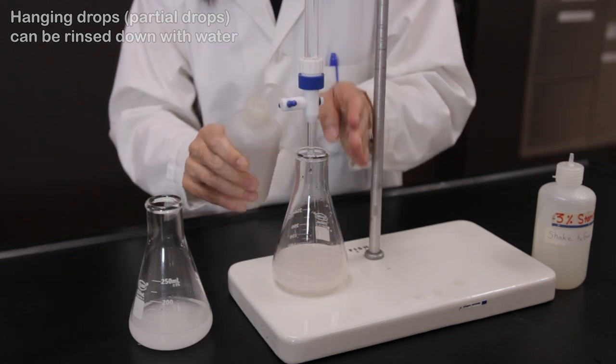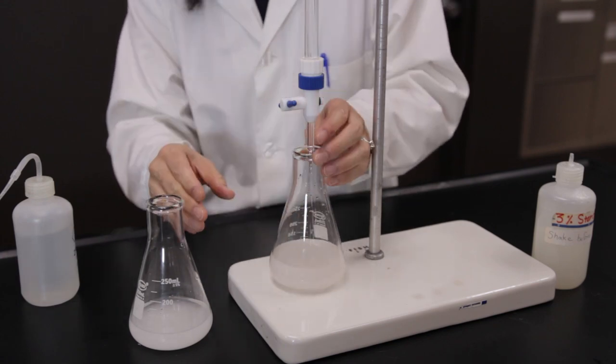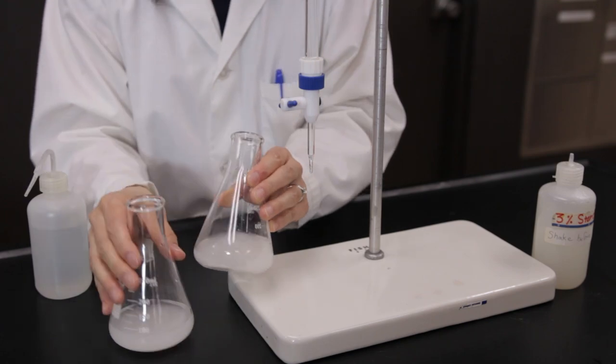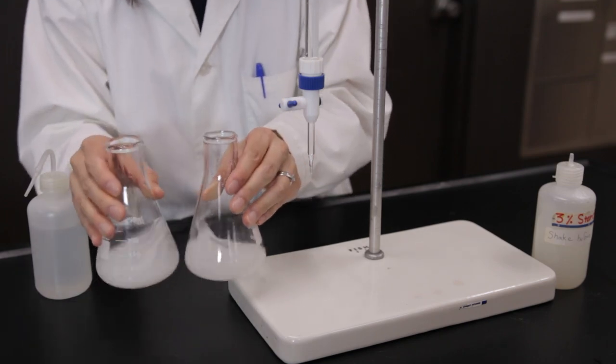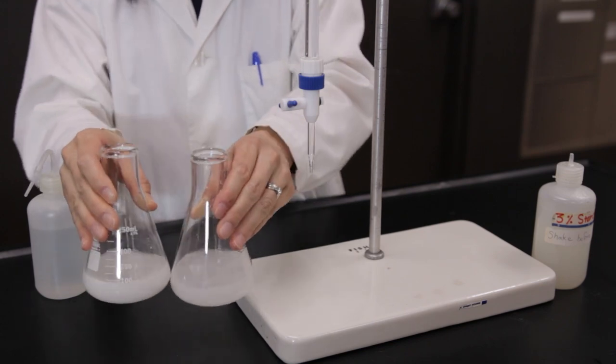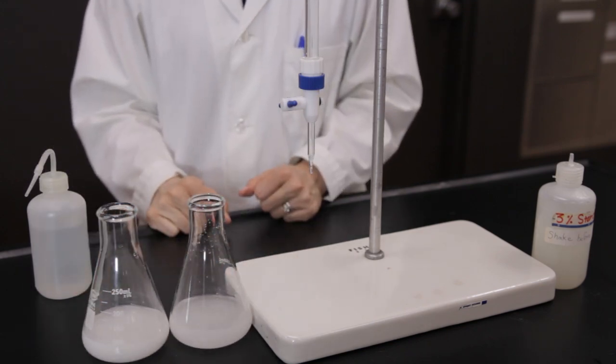Your partner should prepare the additional titration samples while you titrate the first sample. Your experiment is complete when you have at least three titration volumes that are within plus or minus 0.5 milliliters of each other. Clean the glassware and put away the equipment.